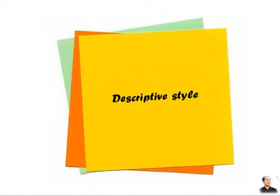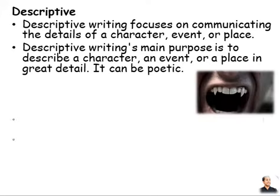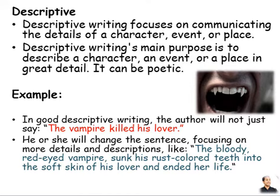The next one is the descriptive style. Descriptive writing focuses on communicating the details of a character, event, or place. Descriptive writing's main purpose is to describe a character, an event, or a place in great detail. It can be poetic also. For example, in good descriptive writing, the author would not just write 'his lover' — he or she would use more details and descriptions, like: 'The bloody red-eyed vampire sunk his rust-colored teeth into the soft skin of his lover and ended her life.' We can see here the change in descriptive language.